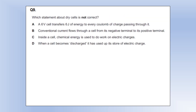Which statement about dry cells is not correct? A 6 volt cell transfers 6 joules of energy to every coulomb of charge passing through it — that's exactly what a 6 volt cell means. Conventional current flows through a cell from the negative terminal to the positive — true, because externally conventional current goes from positive to negative, so inside it goes from negative to positive. Inside the cell, chemical energy is used to do work on electric charges — yes, we increase the electric potential energy. But 'when a cell becomes discharged, it's used up its store of electric charge' — not true: for every charge a battery emits, it takes in another on the opposite terminal.